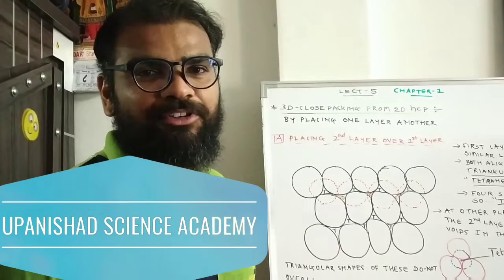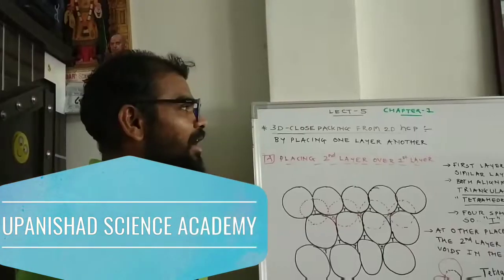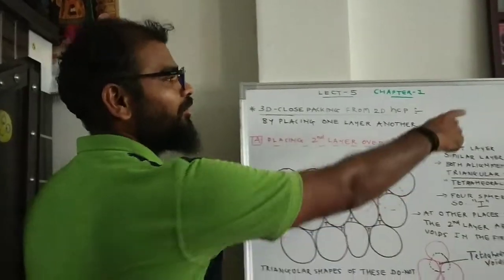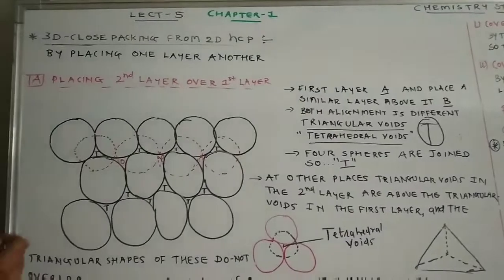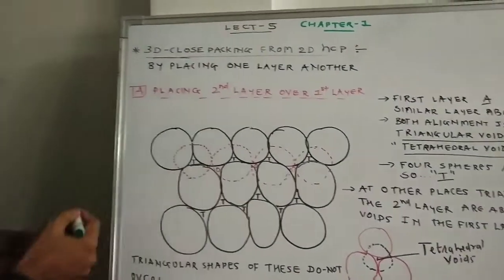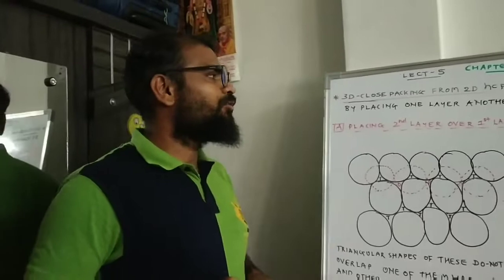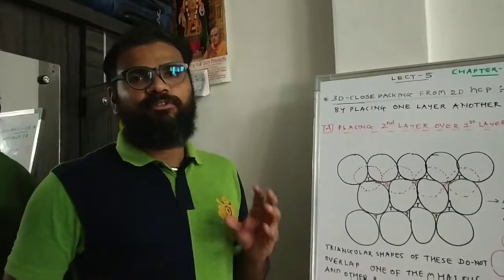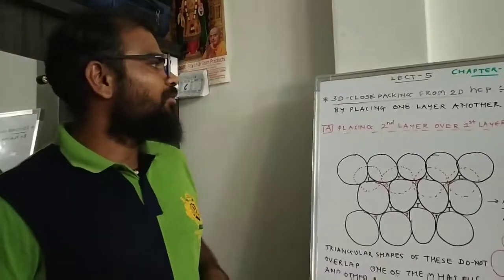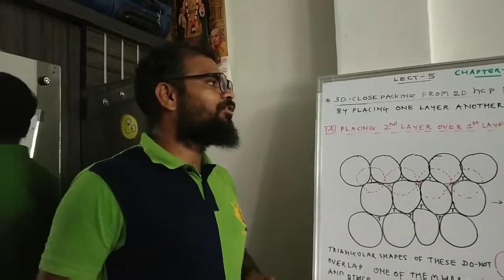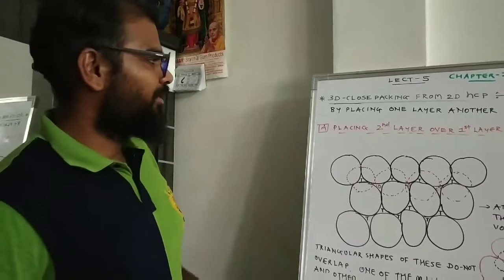Hi, I'm Devang Prajapati from Upanishad Science Academy, Limkheda. Today we are going for the standard 12 chemistry subject, chapter number 1, that is solid state, lecture number 5. Last time we have seen the three-dimensional closed packing. Today we are going from the three-dimension closed packing from the two-dimension hexagonal closed packing structure.